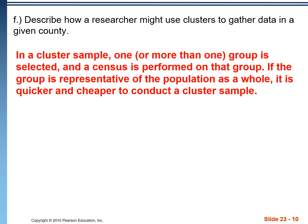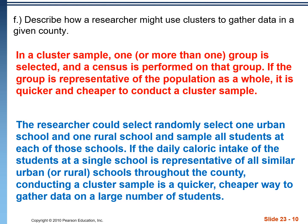In part F, we're asked to describe how a researcher might use clusters to gather data in a given county. When we're dealing with a cluster sample, we select one group — or sometimes multiple groups — and we perform a census on that group. If the group is representative of the population as a whole, it's quicker and cheaper to conduct a cluster sample compared to something like a simple random sample. For this problem, the researcher could randomly select one urban school and one rural school. Make sure you include 'randomly' here because randomization is a key part of any sampling plan. If the daily caloric intake of the students at a single school is representative of all similar urban or rural schools, conducting a cluster sample is a quicker, cheaper way to gather data on a large number of students.